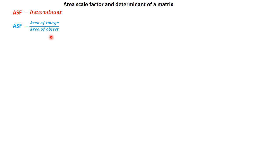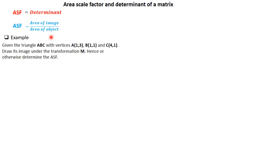Area scale factor and determinant of a matrix. Before the example, I want to say this: the area scale factor is a number — we don't consider the negative sign when it's present. Area scale factor is numerically equal to the determinant of the matrix of transformation. The area scale factor equals area of image divided by area of the object. Let's use an example: given triangle ABC with vertices given, draw its image under transformation M and determine the area scale factor.